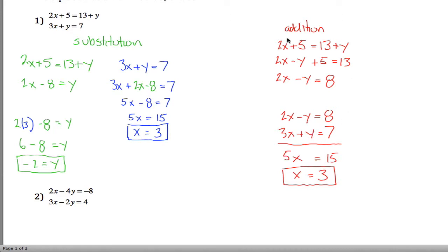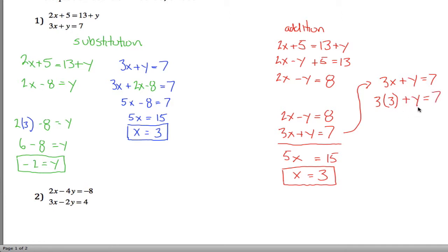Now that I know x equals 3, I can take any equation up here and plug in 3 for x to solve for y. I kind of like the equation 3x plus y equals 7 — it's simple with just a plus 1y. So 3 times 3 plus y equals 7, which means 9 plus y equals 7. Subtract 9 from both sides and 7 minus 9 is negative 2, so y equals negative 2. What I get is x equals 3, y equals negative 2 — same thing I got before.